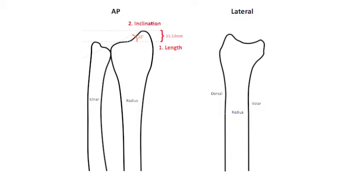Thirdly is volar tilt, seen on lateral x-ray, and is the angle between a line along the articular surface and a line perpendicular to the long axis. This should be about 11 degrees.